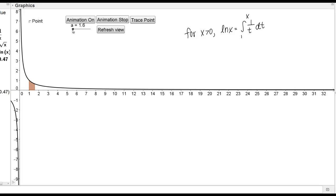So then what I'm going to do is as I move x, I'm going to plot the values of that net area, and those points should look like the graph of the natural log of x. So let's see what happens.